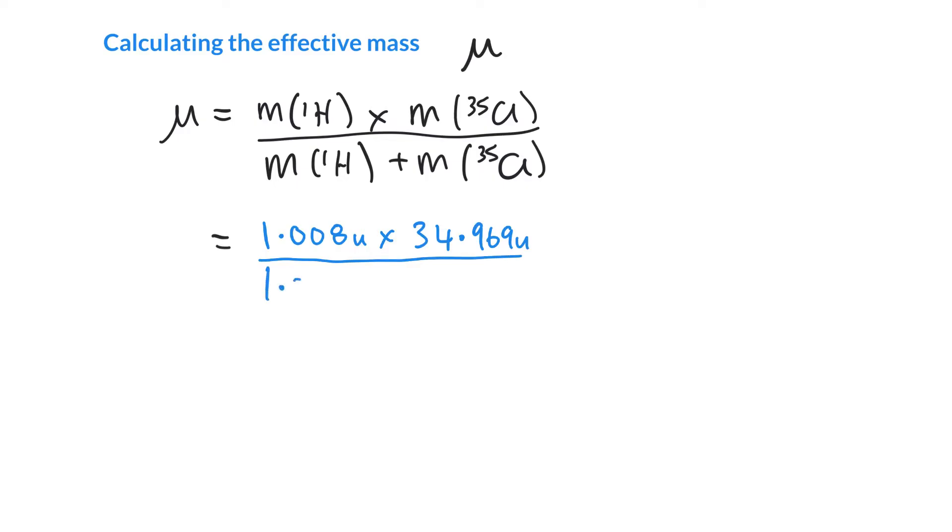On the bottom, we're just summing them together. The units are atomic mass units squared on top, atomic mass units on the bottom, giving us one AMU times a number. We need to convert to kilograms. The atomic mass unit is 1.6605 times 10^-27 kilograms. That gives us the effective mass for our isotopomer, which is 1.6269 times 10^-27 kilograms.